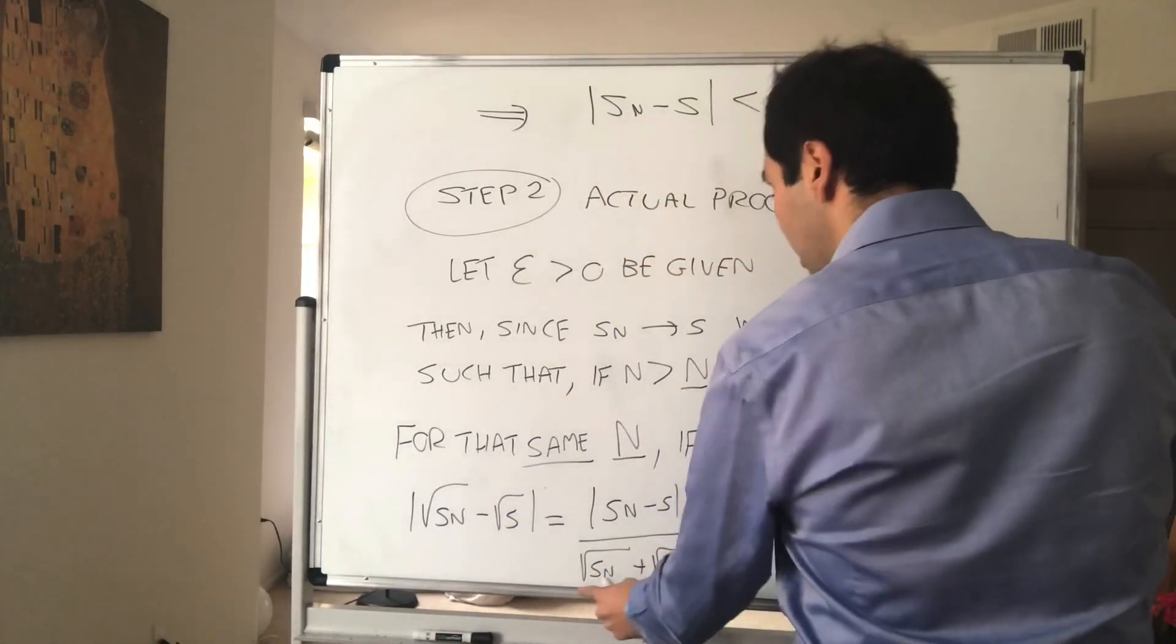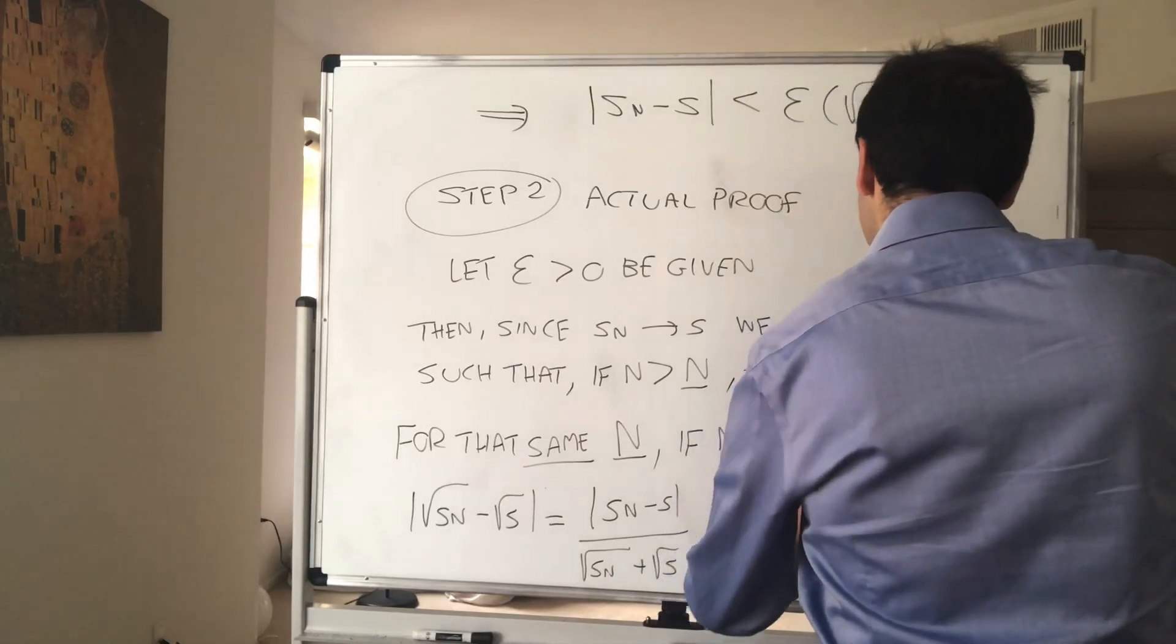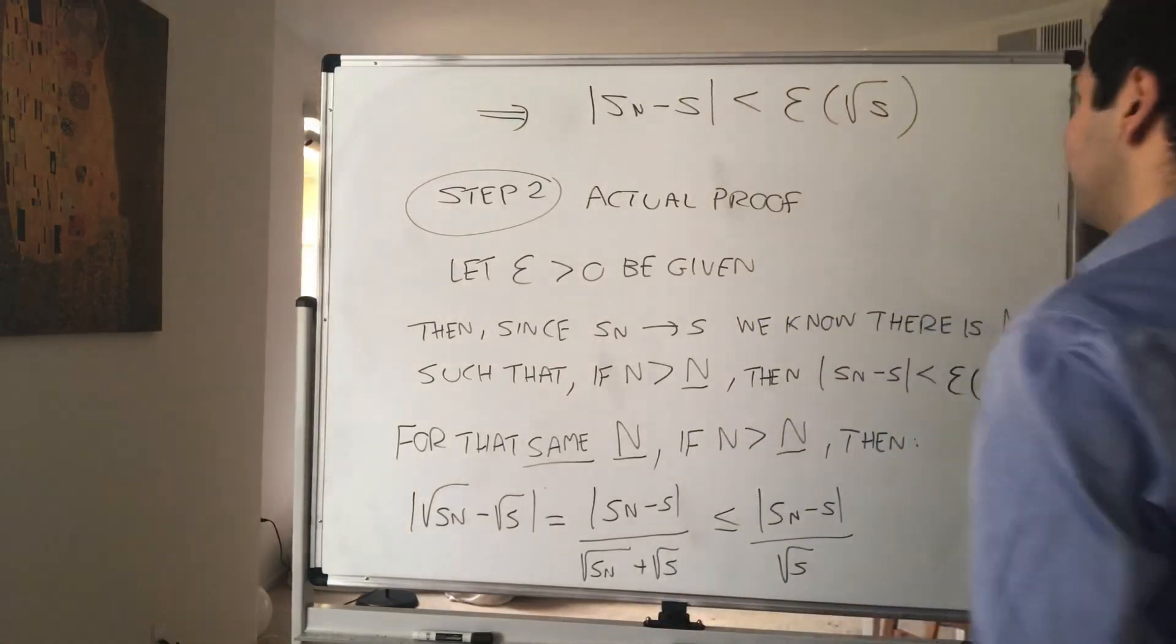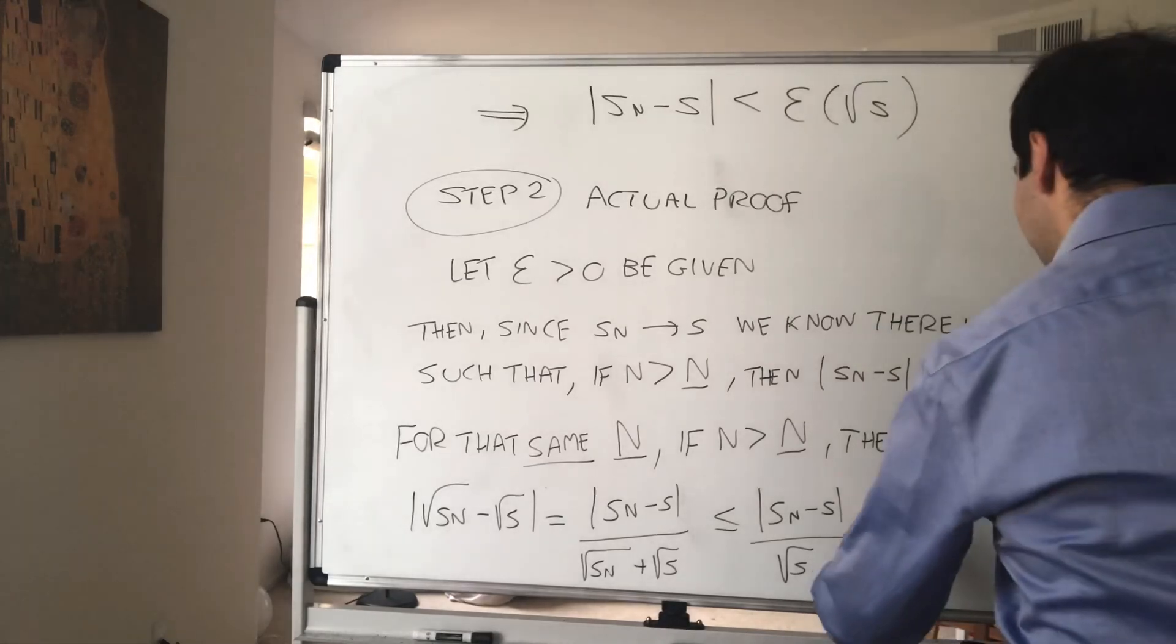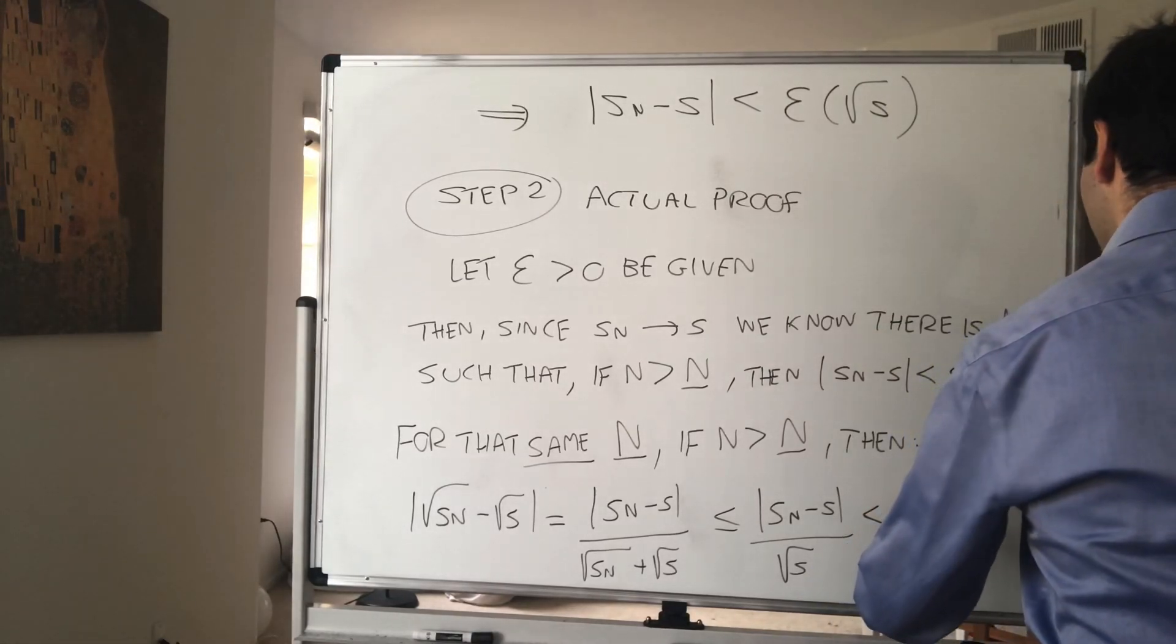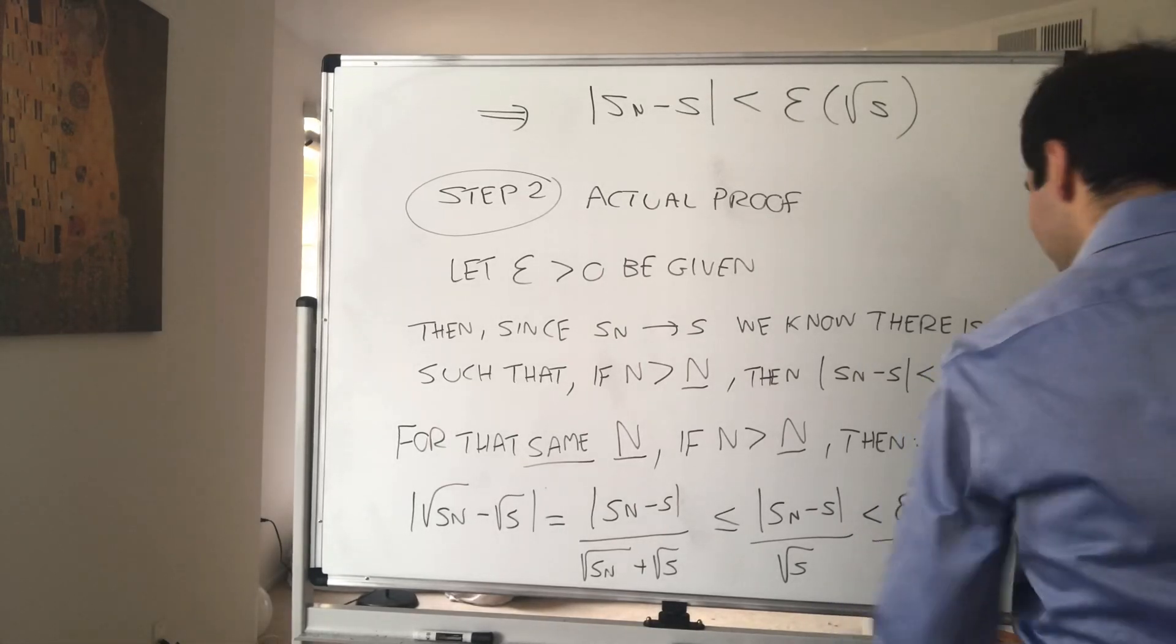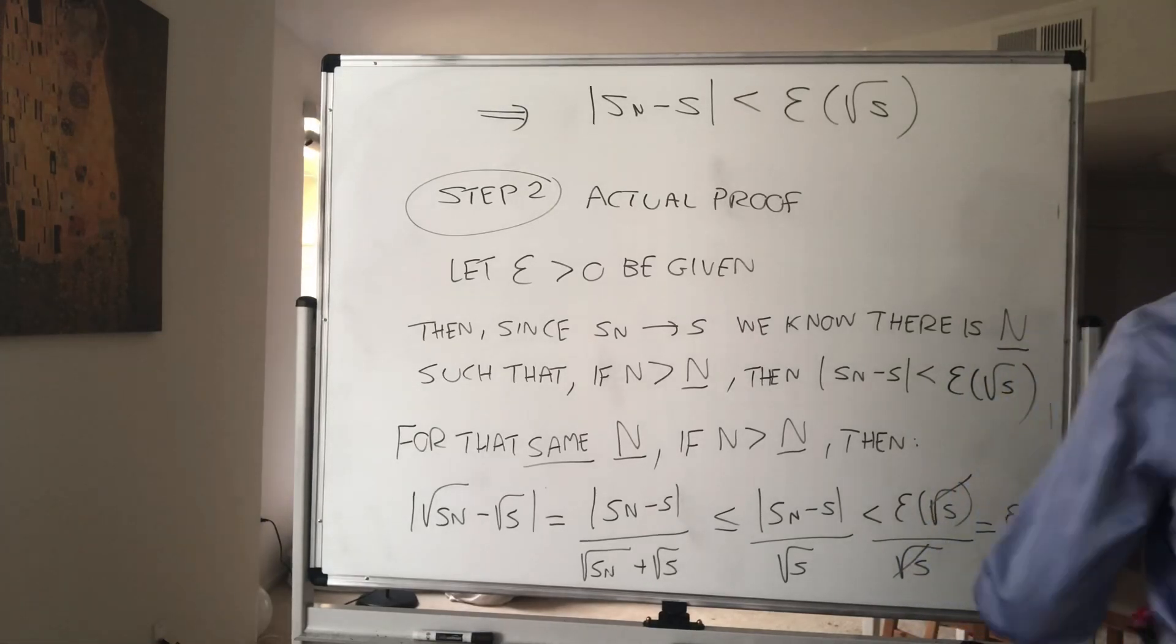Now because this is greater than or equal to 0, this becomes less than or equal to Sn minus s divided by that fixed number. But now Sn minus s, that is less than epsilon times square root of s, and you're dividing this by square root of s, which magically cancels out. And this becomes epsilon.